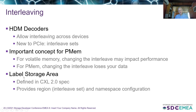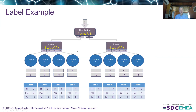To support this, we introduced the idea of a label storage area on each device, defined in the spec. It provides labels that define interleave sets, which we call regions, and also namespaces, which are similar to NVMe Express namespaces. Here's a quick diagram: a CXL host bridge with a couple of switches, each switch with four devices. The gray boxes show the logical block numbers zero through seven — an eight-way interleave set across eight devices. The label tells you how many devices are in the interleave set, each device's position in that set, and the interleave granularity. This allows the OS to reassemble the interleave set and also detect problems like a missing component or misconfiguration.